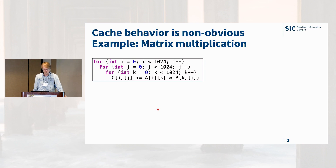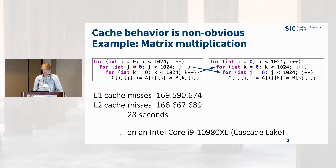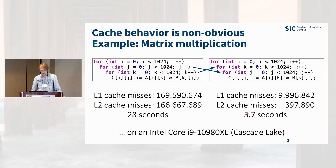Here's a simple example. We see a straightforward dense matrix multiplication code, and if I run this on my desktop computer, I get these results — a bunch of cache misses, L1 and L2 misses, and it takes 28 seconds. Now if I do a little loop interchange, interchanging the innermost loops, I get a new code. The number of cache misses drastically shrinks, and we get about a 5x speedup due to this simple transformation.